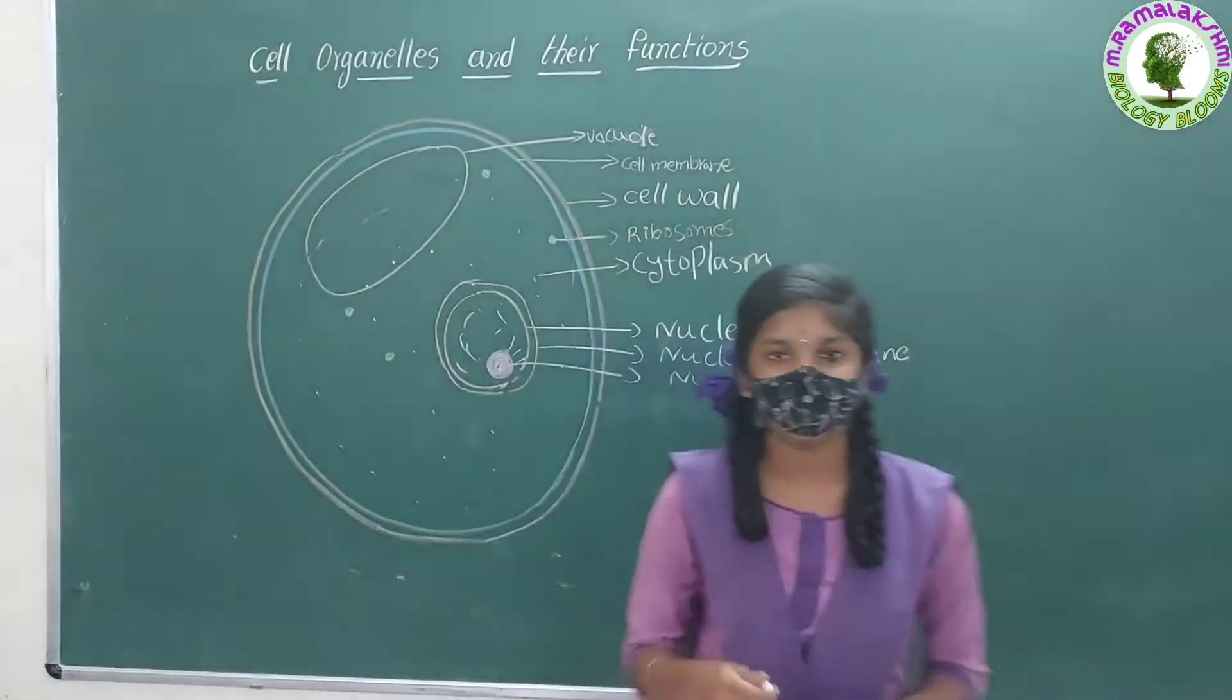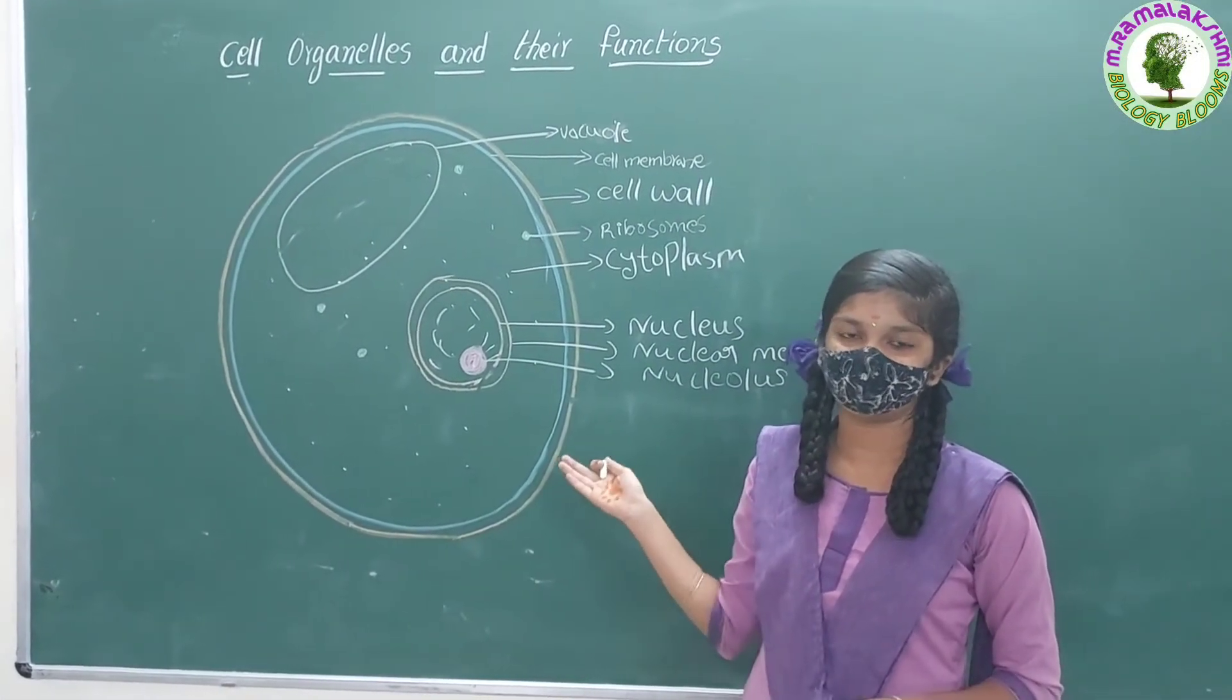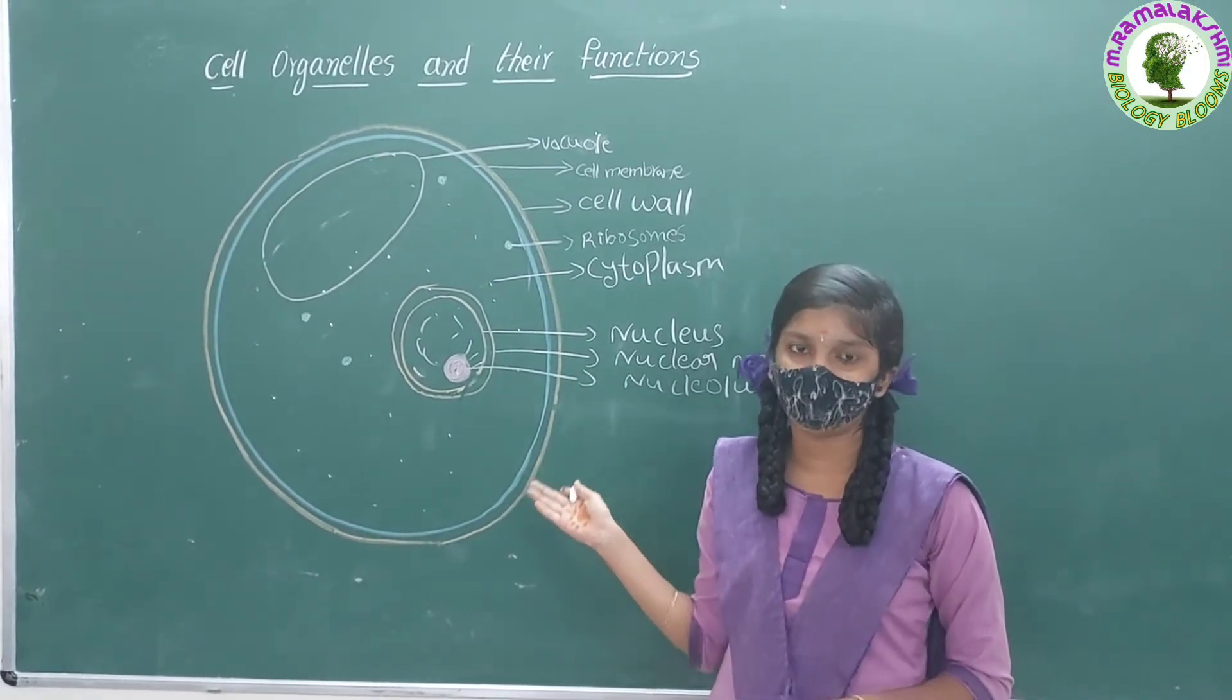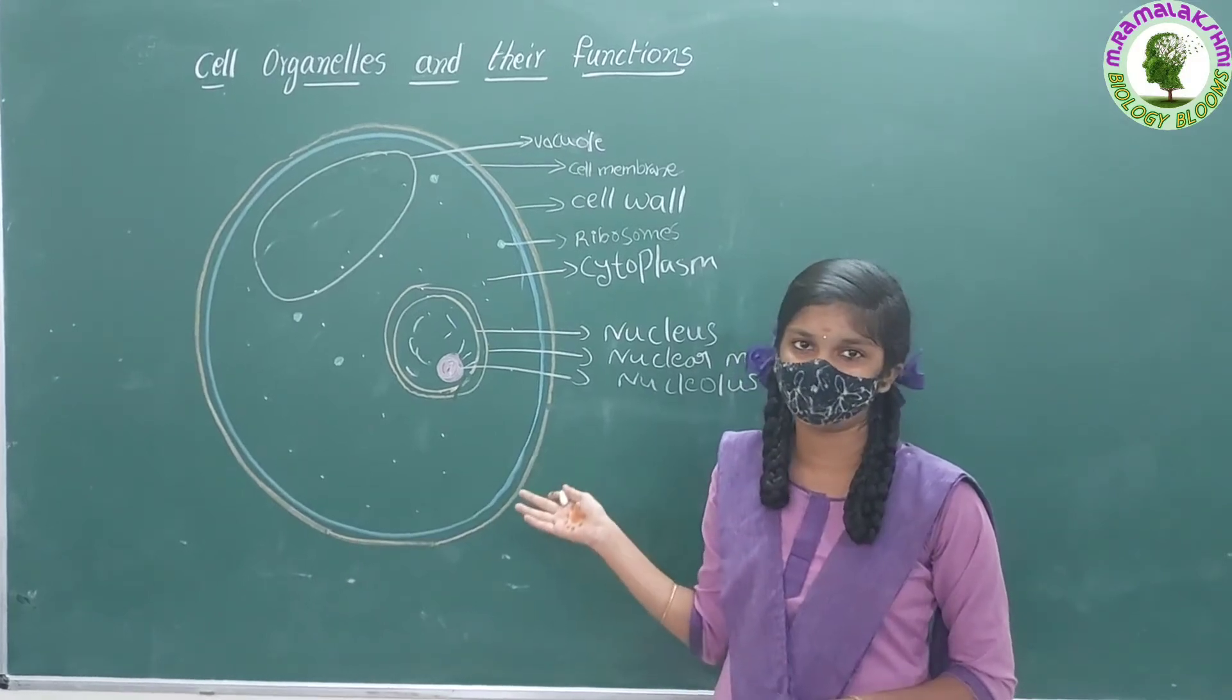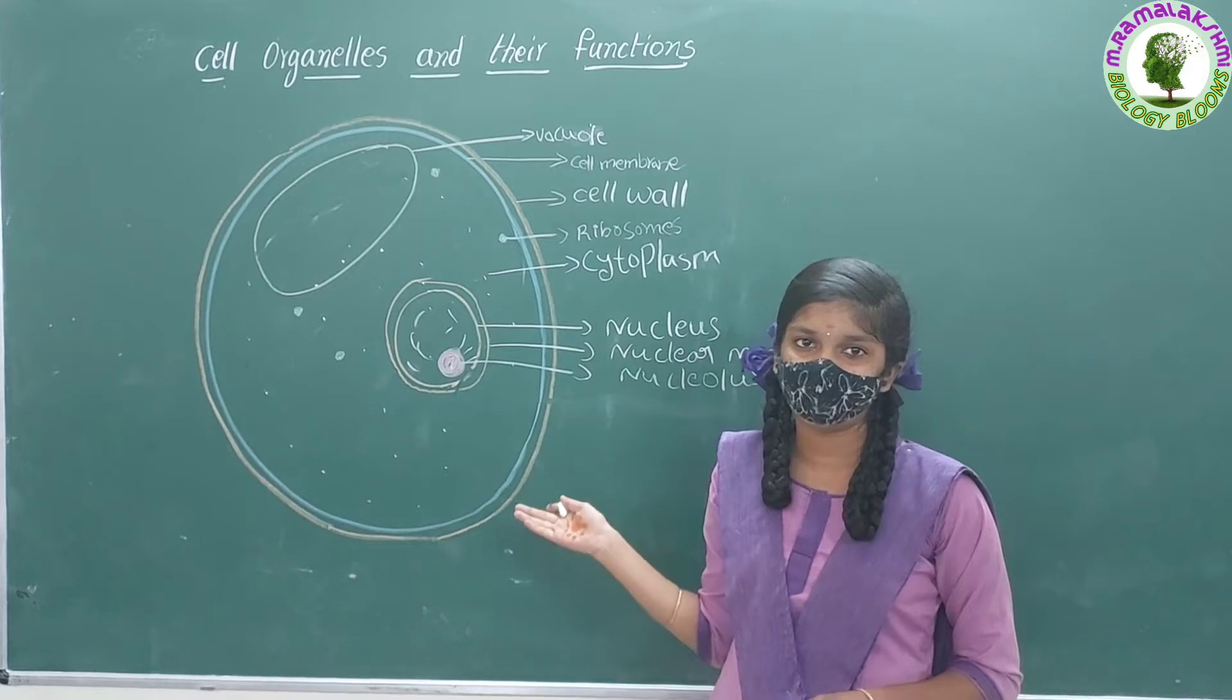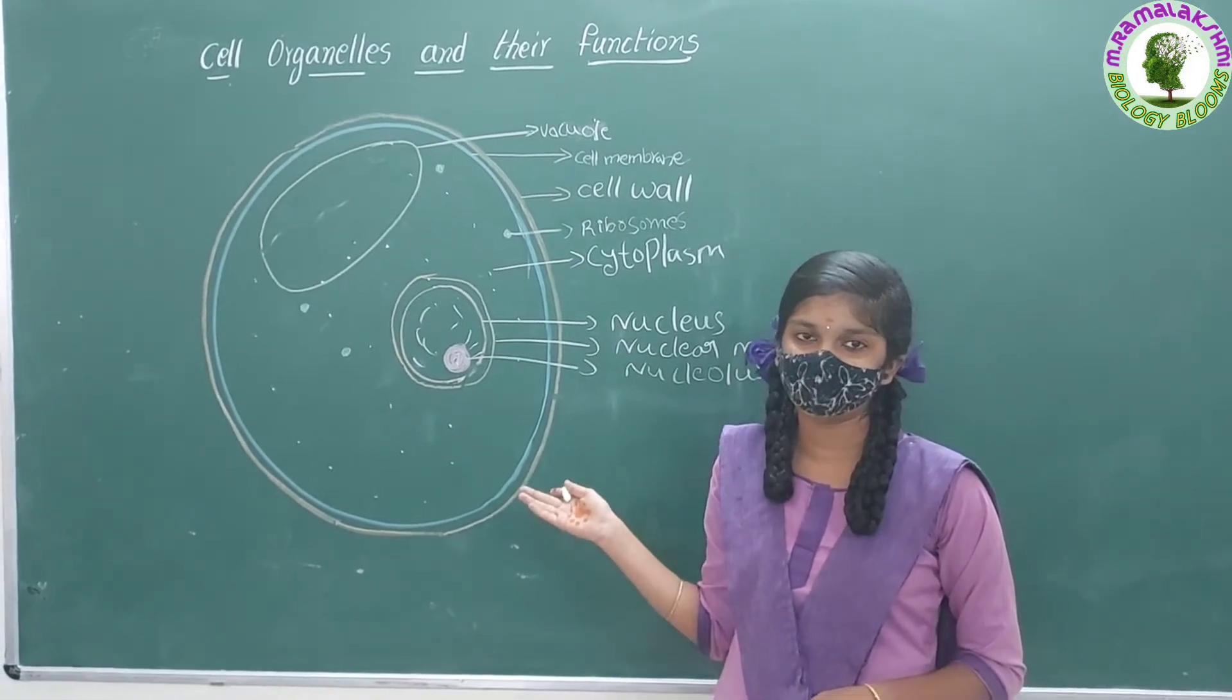I am ribosome. I am a small granule structure in the cytoplasm of the cell. I am of two types: free ribosomes and attached ribosomes. As free ribosomes, we are scattered in cytoplasm. As attached ribosomes, we attach on the surface for protein synthesis.